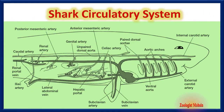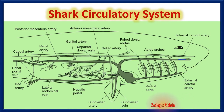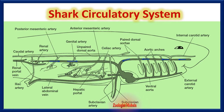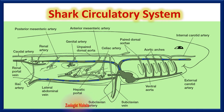In this diagram, please note that dark tubes are veins and lighter ones are arteries. We know that veins collect deoxygenated blood from all parts of the body after exchange of materials in capillaries.